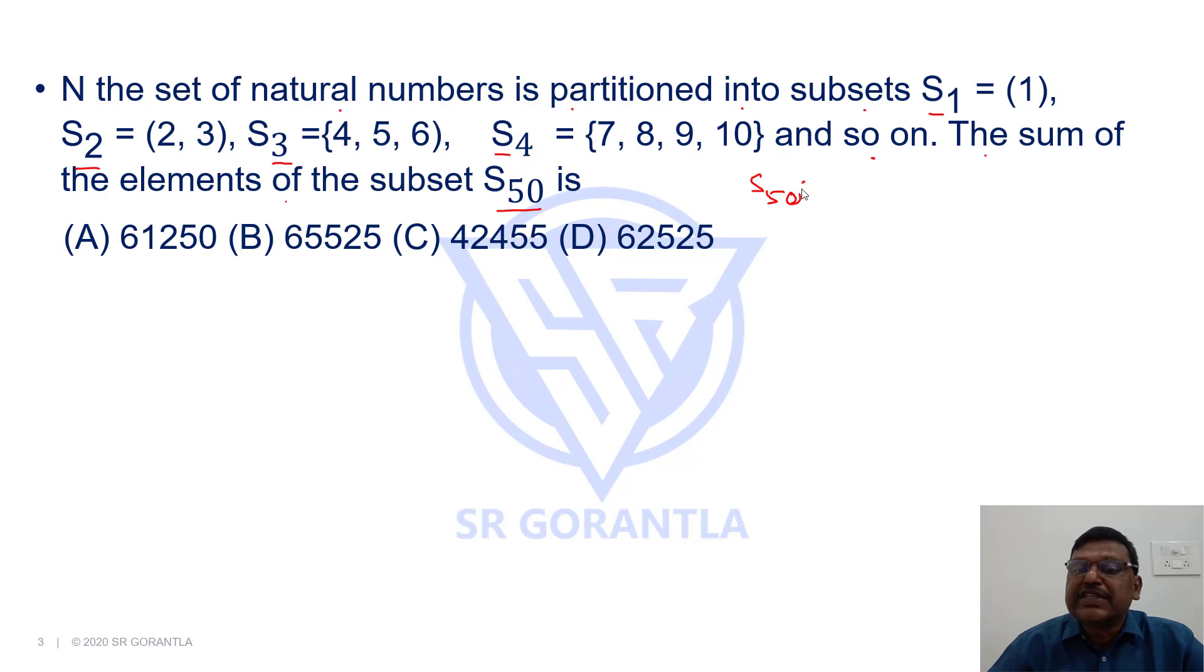Now, if you look at S1 has got one element in it, that is the first natural number. S2 has got two elements, which are the next two natural numbers. S3 has got three elements, S4 has four elements. So S50 will have how many elements in this subset? There will be 50 elements.